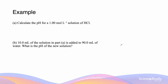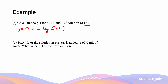This is a multi-part example. Part A asks us to calculate the pH for a 1 mol/L solution of HCl. pH equals the negative log of the H+ concentration. Since HCl is a strong acid, it fully dissociates, meaning the H+ concentration is 1.0. So pH equals the negative log of 1.00, giving a pH of 0.00.